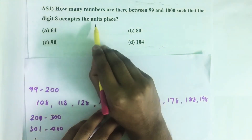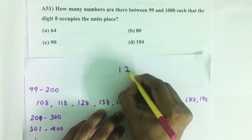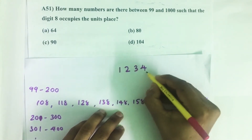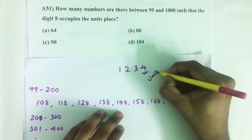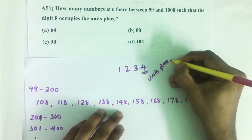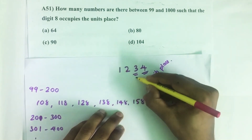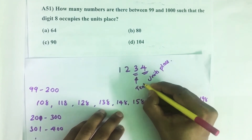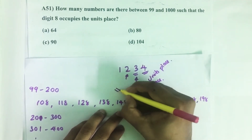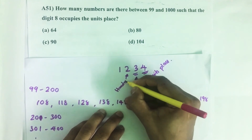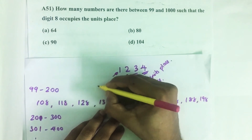First we need to know what is meant by unit's place. Let's take an example: 1, 2, 3, 4. The place where this 4 is located is called the unit's place. The place where 3 is located is called the 10th place. This is the 100th place, and finally, this is the 1000th place.